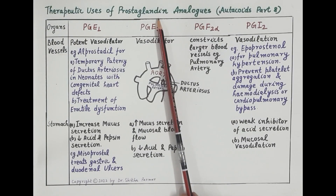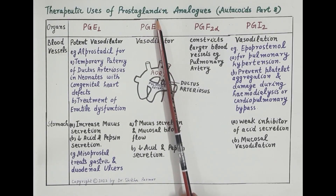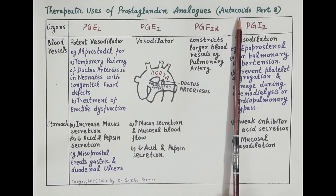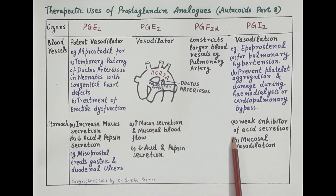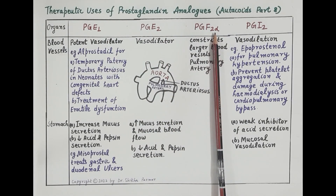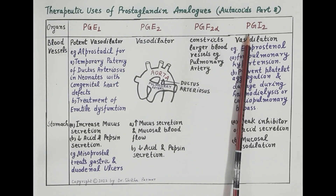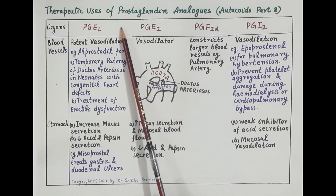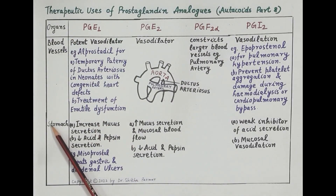Hello students. After discussing introduction, synthesis, and pharmacological actions of eicosanoids — prostaglandins, prostacyclin, thromboxane A2, and leukotrienes — in our last videos (eicosanoids parts six and seven), in this video we'll discuss therapeutic uses of prostaglandin analogs. This is video eight in the eicosanoids series. Prostaglandin E1, E2, and F2 alpha are isomers of prostaglandins, while PGI2 is a prostacyclin synthesized from cyclic endoperoxides by the enzyme prostacyclin synthase.